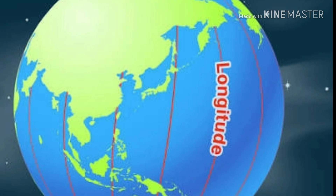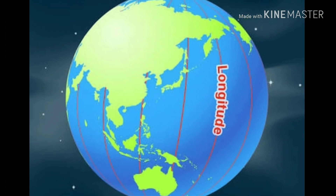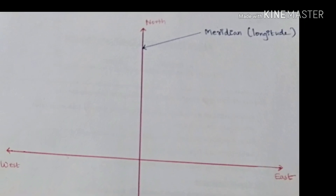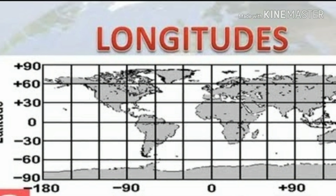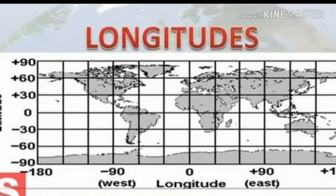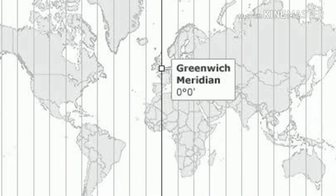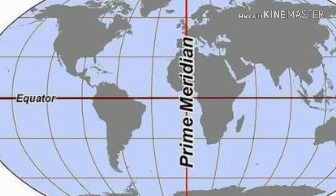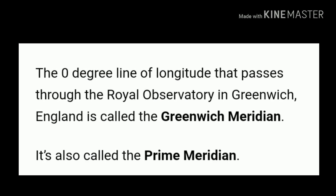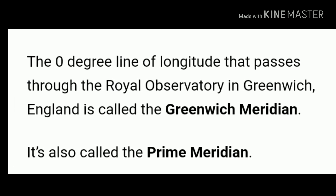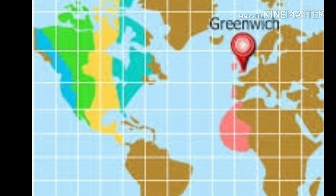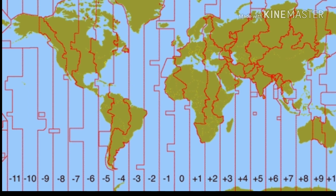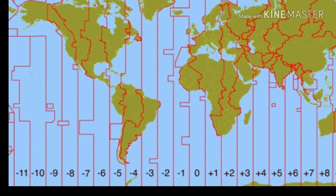Longitude is a meridian. Longitude is called that in South Korea, and in Tamil we say it is a longitude. The assumption of Greenwich is 0 degrees — it is a prime meridian. Greenwich longitude is GMT. Over 15 degrees we have time zones: GMT plus zone and GMT minus zone.